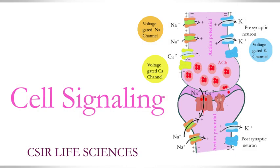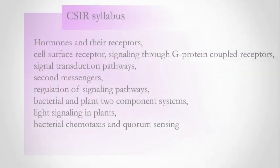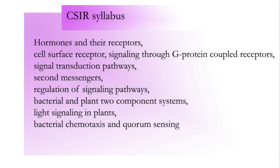Hi, let's learn about cell signaling. This is an important area for CSAR examination. The following are the topics coming under cell signaling: hormones and their receptors, cell-surface receptor signaling through G-protein coupled receptors, signal transduction pathways, second messengers, regulation of signaling pathways, bacterial and plant two-component systems, light signaling in plants, bacterial chemotaxis, and quorum sensing.